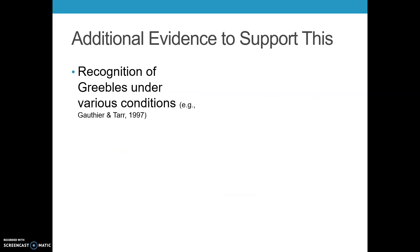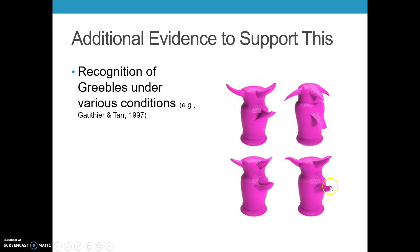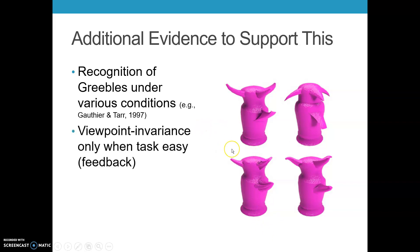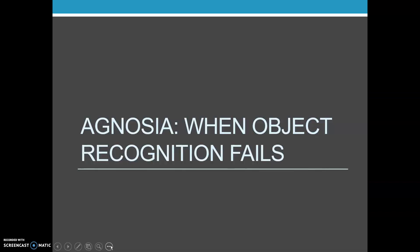Additional evidence: Tarr and colleagues created fake three-dimensional objects called Griebels, made up of heads with three different types of structures and a central bottom structure. Gauthier and Tarr in 1997 had people view Griebels under various conditions and found that viewpoint invariance occurs only when the task is easy and feedback is given. These objects are very hard to distinguish and are probably viewpoint-dependent much of the time.